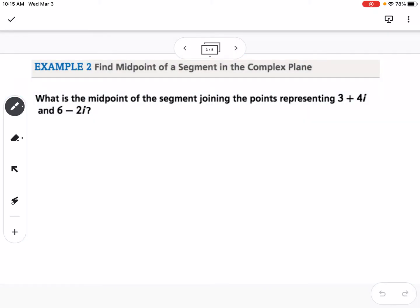So the next question is, what is the midpoint of the segment joining the points representing 3 plus 4i and 6 minus 2i? We're going to find the midpoint the same way we would with two points. You're going to add the real parts and divide by 2, so 3 plus 6 over 2.